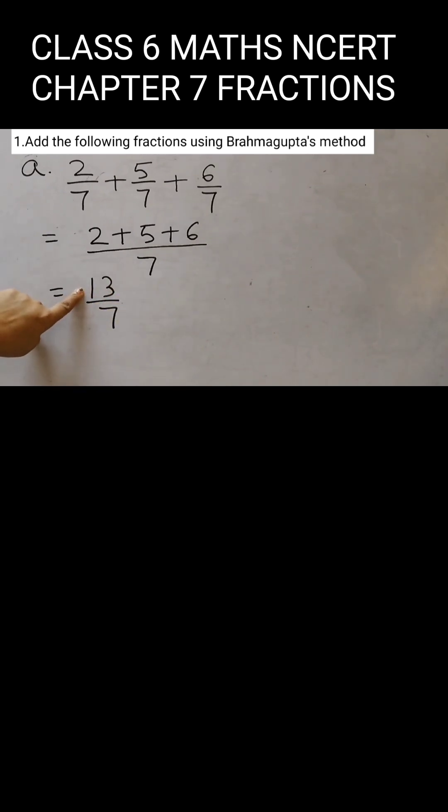Now, here you see the numerator is bigger than the denominator. So, if we want, we can convert it to a mixed number. And how do we do that? You divide 13 by 7. 7 once is 7. Subtract, we get 6.